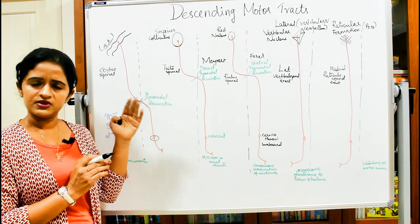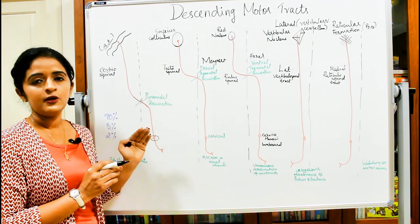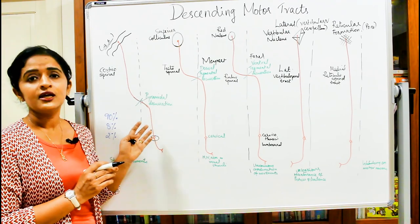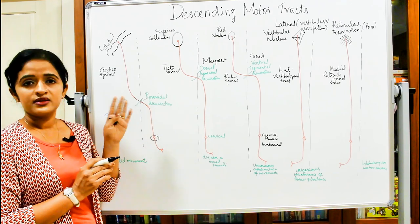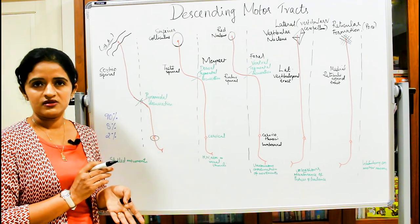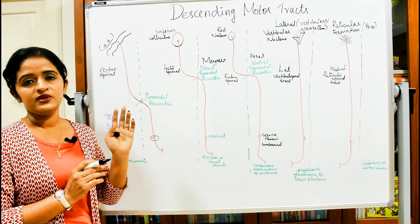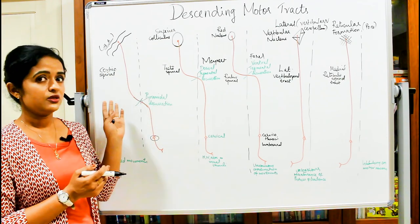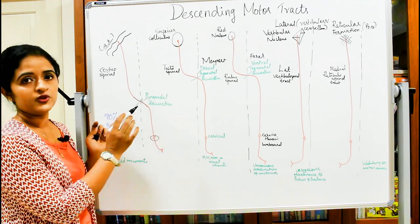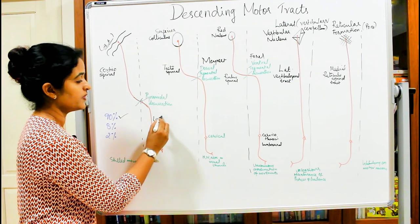The corticospinal fibers terminate at different levels throughout the spinal cord, from cervical, thoracic, lumbar, and sacral regions. About 50% end in the cervical region, and the rest end in the thoracic and lumbosacral regions. Of the corticospinal fibers, 90% cross to the opposite side through the pyramidal decussation, forming the lateral corticospinal tract.